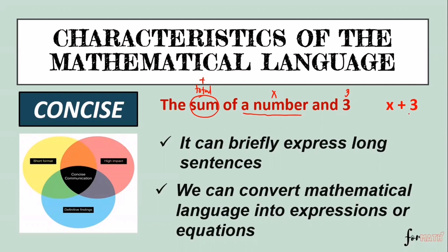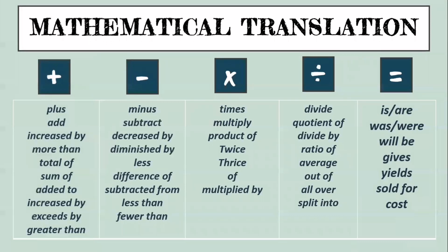So here are some mathematical translations that we can use. For example, in addition we can use the word plus, as is, or add, increased by, more than, the total of, sum of, added to, increased by, exceeds by, greater than. For minus or subtraction, we can use the word minus, subtract, decreased by, diminished by, less, difference of, subtracted from, less than, fewer than.